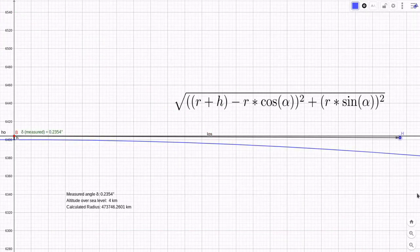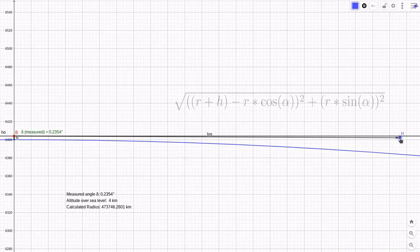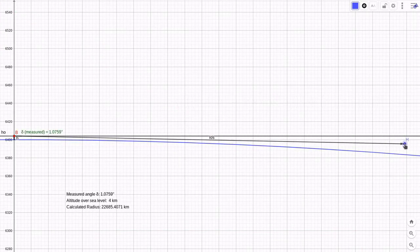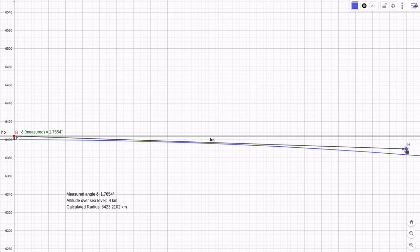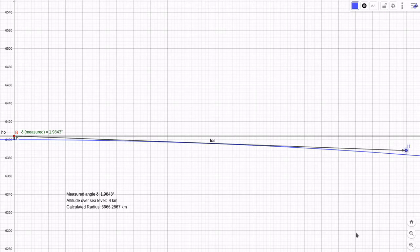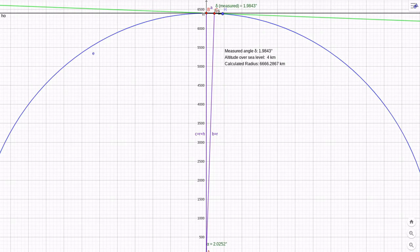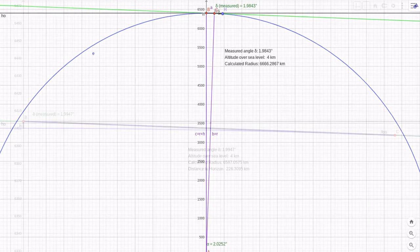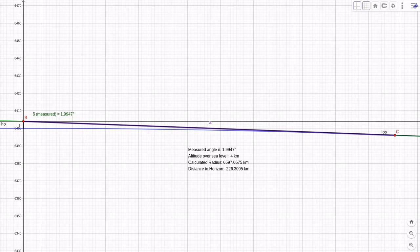If you measure the dip of the horizon from a mountain 4 kilometers high, for example Mauna Kea on Hawaii, you get something very close to 2 degrees. And as you can see, when we simulate this measurement in our model by adjusting the line of sight to this angle and set H to 4 kilometers, the resulting Earth radius is roughly 6,600 kilometers. And that's a pretty good approximation to Earth's actual radius, which is 6,370 kilometers on average.